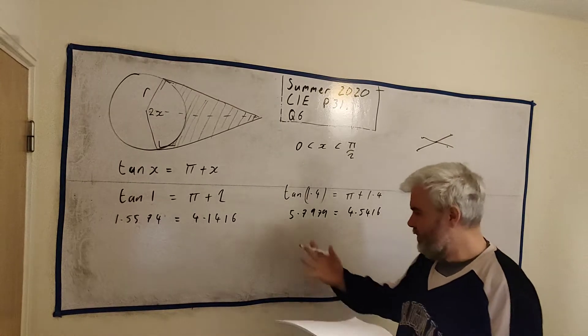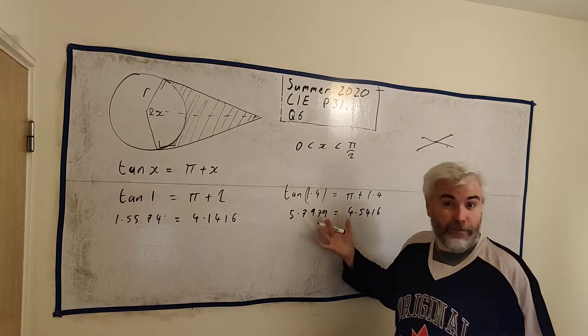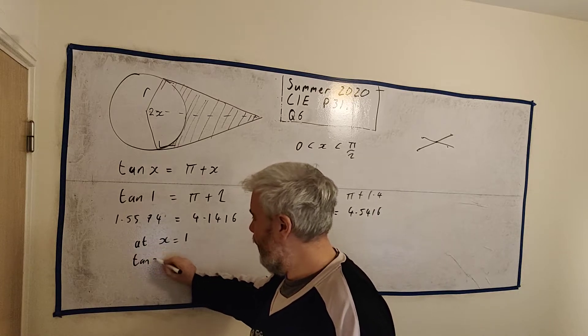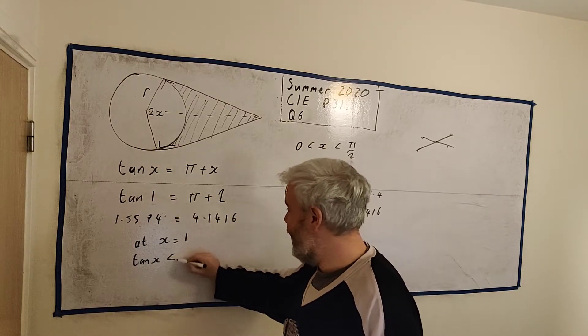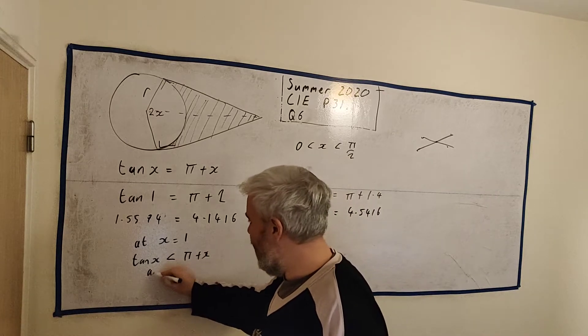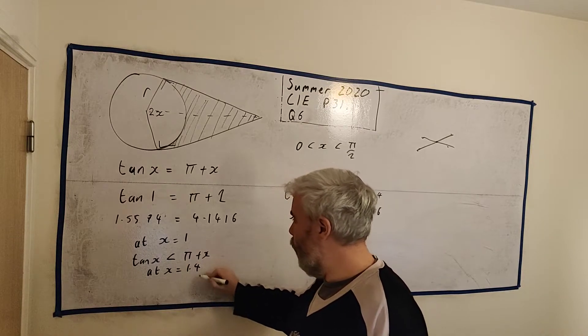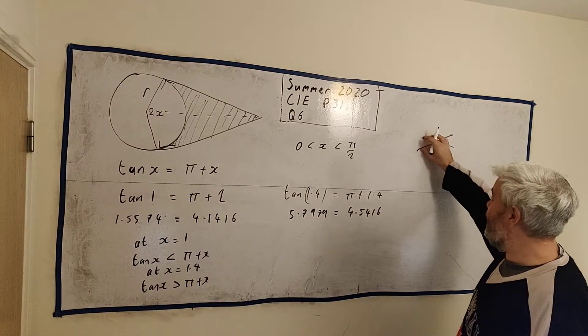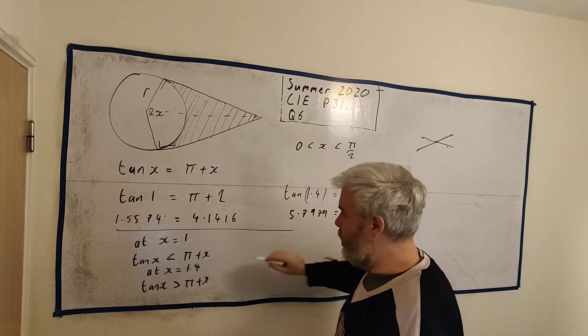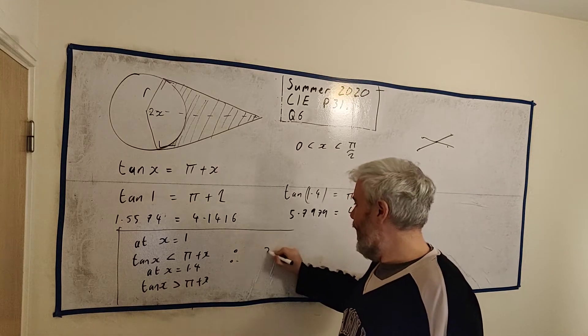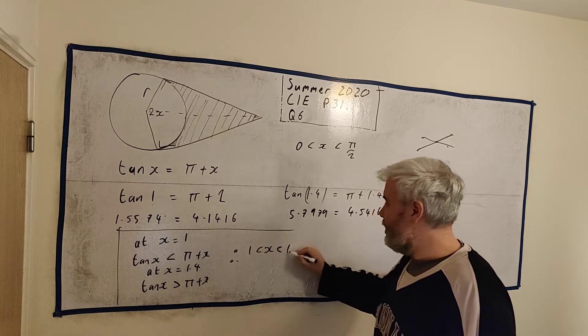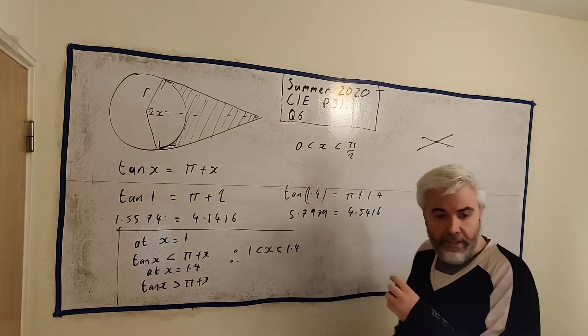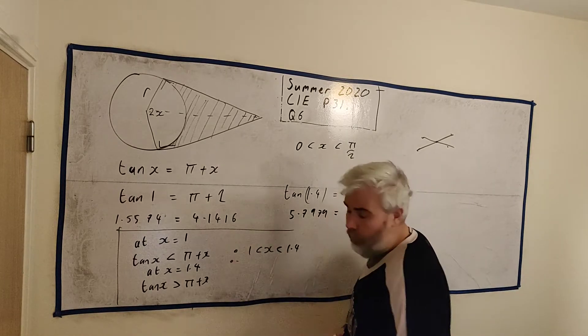To write that, this is how I've come up with writing this in the exam. This is enough, by the way. But maybe at the end, you could write something like: at x equals 1, tan(x) is less than pi plus x. And at x equals 1.4, tan(x) is greater than pi plus x. That's really what I'm trying to say here. It's less than and it's greater than. It must meet in the middle. So here's what I'd write as the answer: Therefore, x is greater than 1 and less than 1.4. That's what I would take from that piece of information. And that's your full mark for part B.